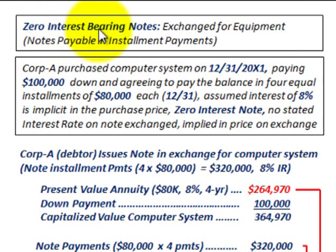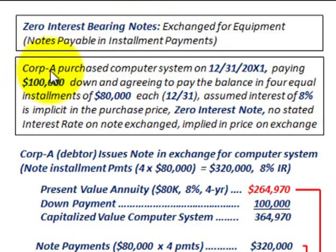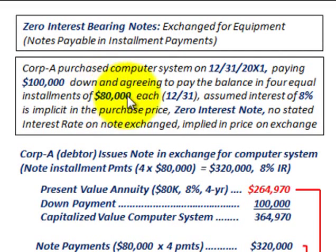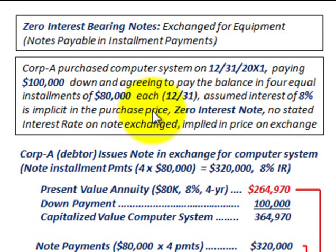We're going to be looking at a zero interest bearing note exchanged for equipment, where we have a notes payable with installment payments. Corporation A purchased a computer system on 12/31/X1 by paying $100,000 down and agreeing to pay the balance in four equal installment payments of $80,000 each, paid at the end of each of the next four years on 12/31. It's assumed there's an interest rate of 8% implicit in this purchase price.